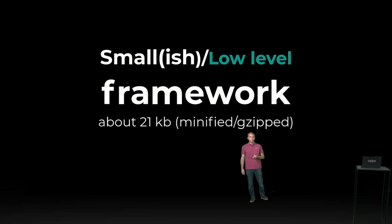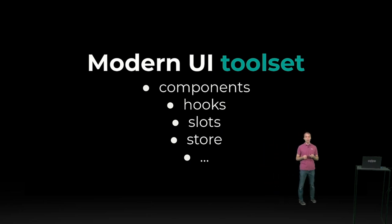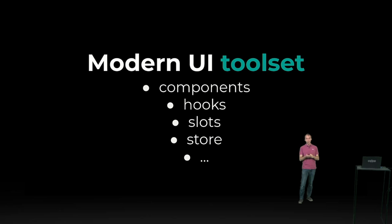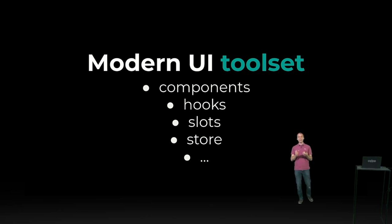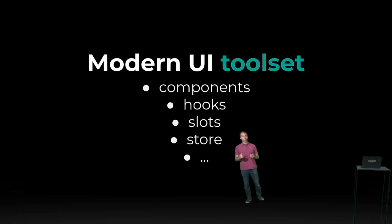OWL is also quite small, and it won't grow that much. OWL provides a modern user interface toolset. We looked at all of the other mainstream frameworks and tried to understand the value of each concept. Some of them had really powerful ideas — for example, React provided hooks, which are simple, composable, and have a lot of nice properties. We tried to replicate those good properties into our own framework. OWL provides you with components, hooks, state management, reactivity, and a lot of powerful abstractions in a small package.